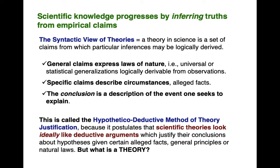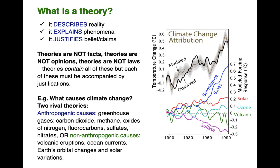All of this raises the question: what is a theory? A theory has three essential attributes. First, a theory describes reality. Second, it explains things and events. Third, it's supposed to justify beliefs about those events. Theories aren't facts, aren't opinions, and aren't laws of nature — theories contain and draw conclusions from all of these, but each must be accompanied by justification. For example, two rival theories: the anthropogenic theory of climate change holds that humans have a major role, with causes including greenhouse gases — carbon dioxide, methane, oxides of nitrogen, fluorocarbons, sulfates, nitrates pumped into our atmosphere by human activity. The rival non-anthropogenic theory attributes causes to volcanic eruptions, ocean currents, Earth's orbital changes, and solar variations.